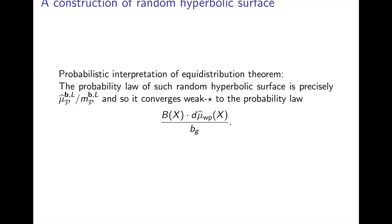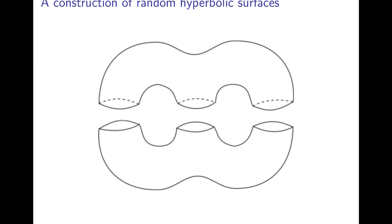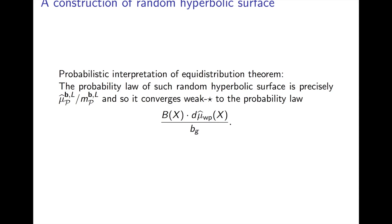The statement is that in this procedure for building random hyperbolic surfaces, as I take the parameter L going to infinity, the law of these random hyperbolic surfaces converges weak-star to the probability law that shows up everywhere: the Mirzakhani function times the Weil-Petersson measure, normalized to be a probability measure. In the case of pairs of pants one can give this simple interpretation of equidistribution as a statement about how this random construction of hyperbolic surfaces converges to this particular law.